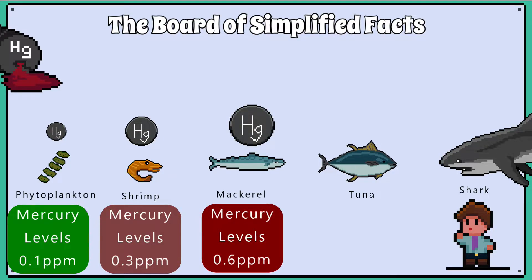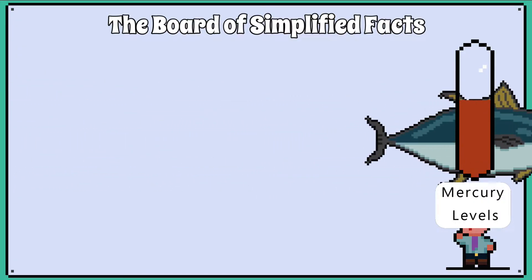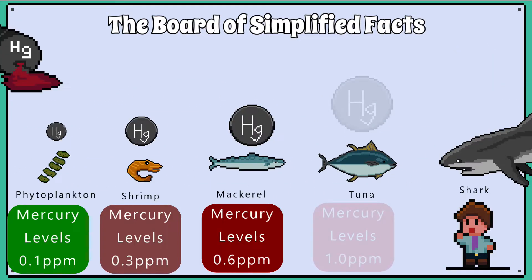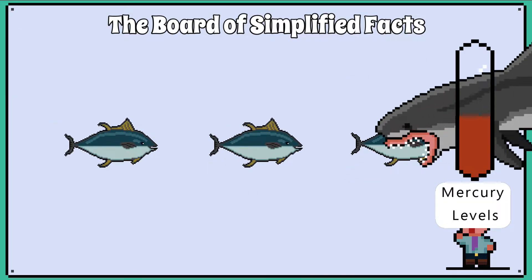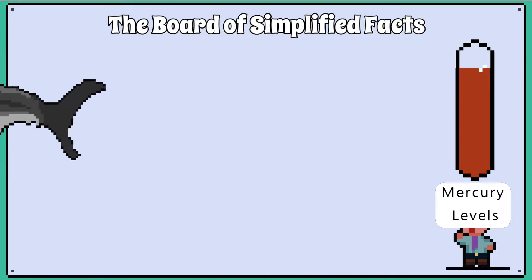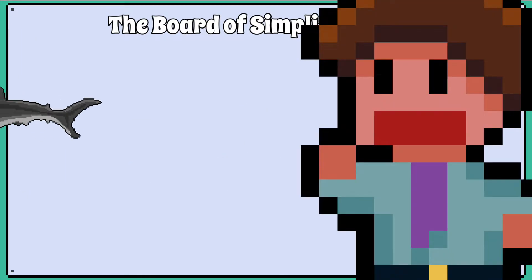Next, the tuna feed on the mackerel, and again they eat many mackerel to survive, and we see mercury levels reach 1 part per million in an individual tuna fish. A great white shark then eats many tuna fish, and the mercury levels in the shark reach 2 parts per million.